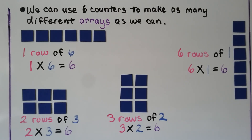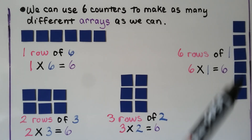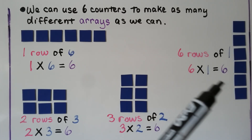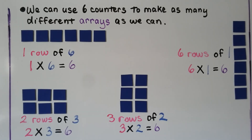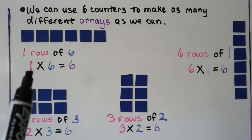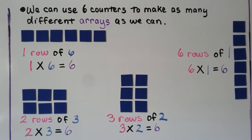We can use six counters to make as many different arrays as we can think of. One row of six is one times six, equal to six. Six rows of one is six times one, also equal to six. Two rows of three is two times three, equal to six. Three rows of two is three times two, which equals six.